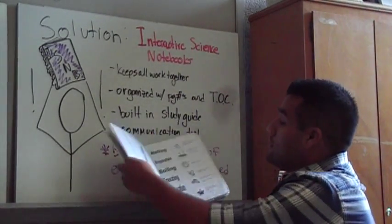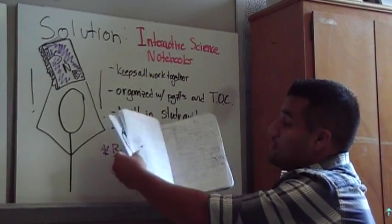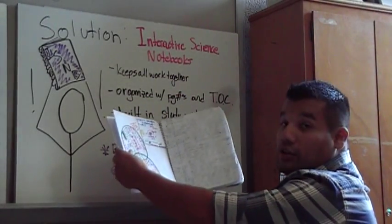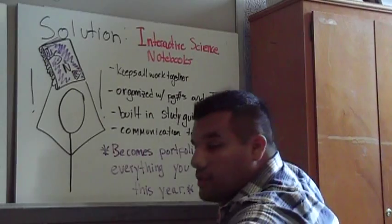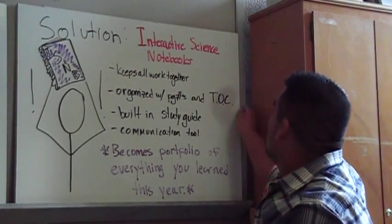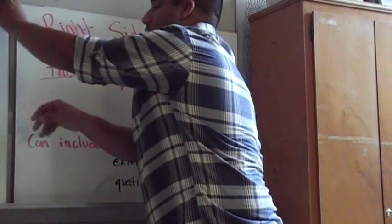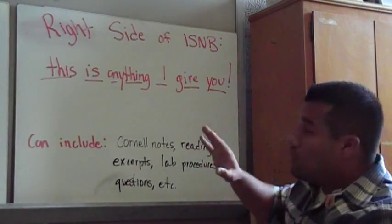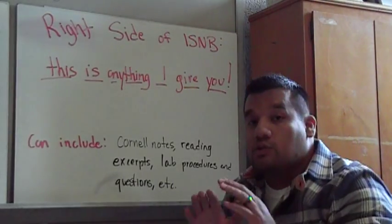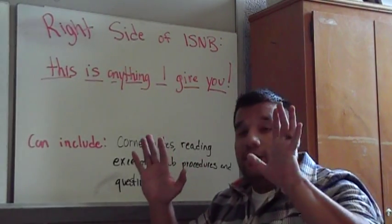And it keeps all your work together. So everything that this student did is in their interactive science notebook. Your interactive science notebook is broken up into two sides, the right side and the left side.